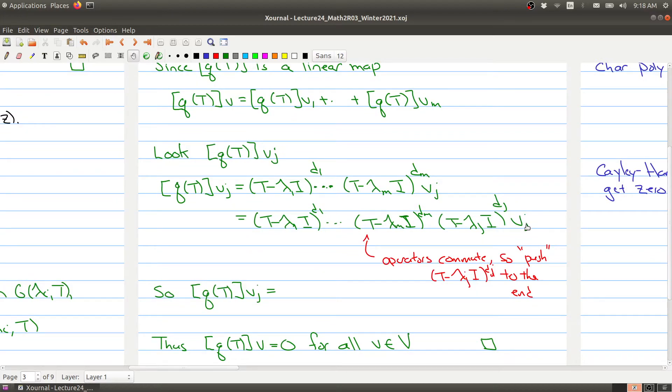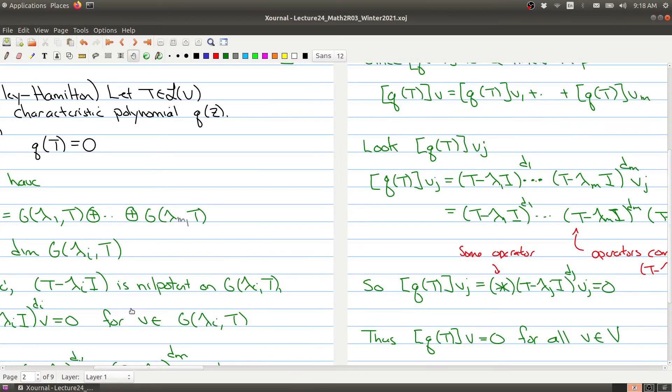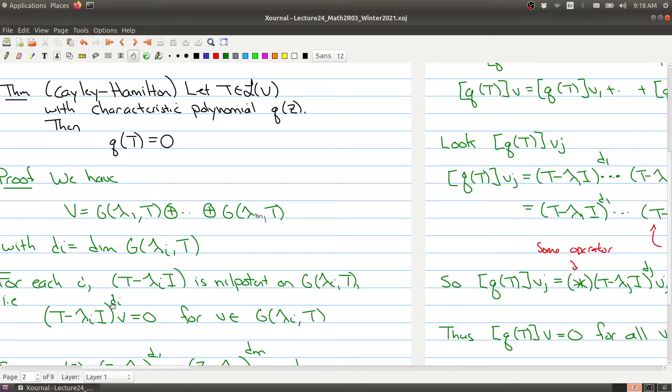Now remember, vⱼ was in the generalized eigenspace of λⱼ, and this operator is nilpotent on it. So this now looks like some operator times (T - λⱼI)^dⱼ(vⱼ), and this equals zero. This part being zero follows from what we mentioned earlier on this line right here.